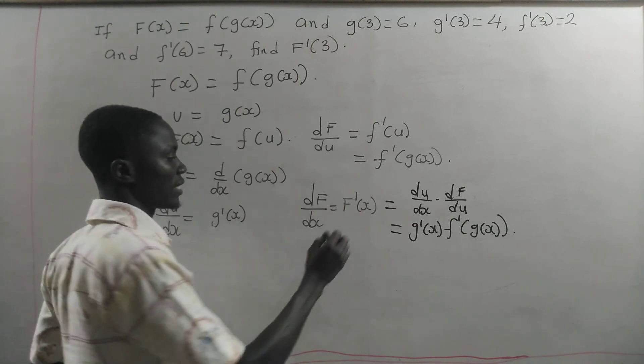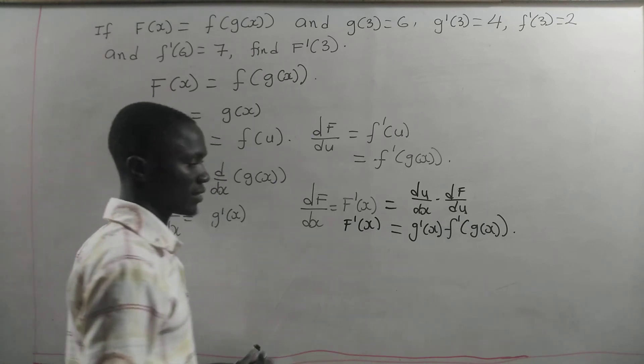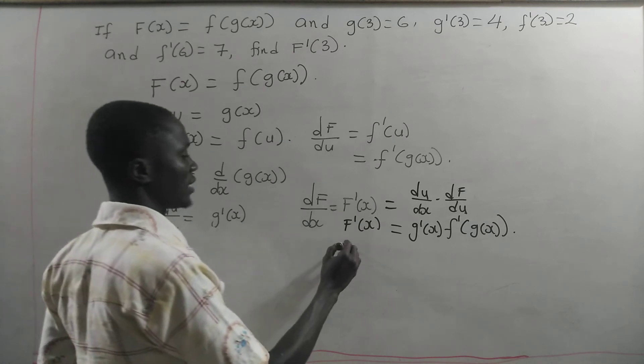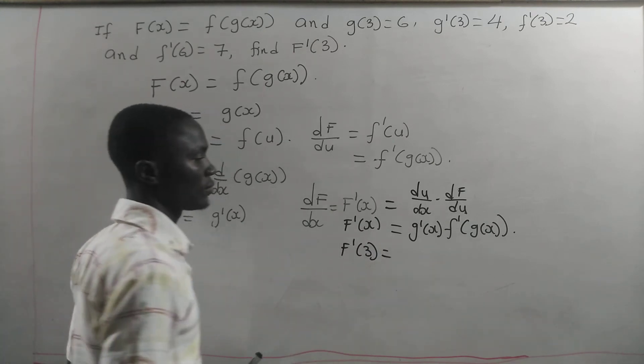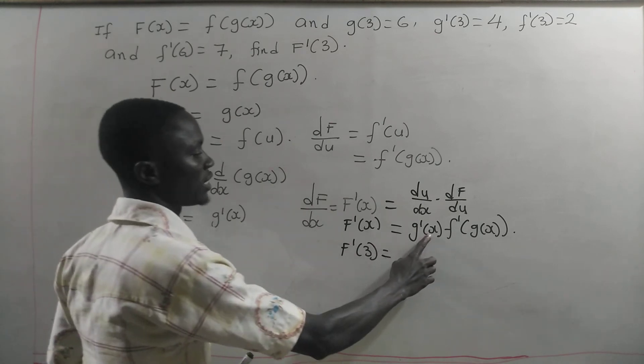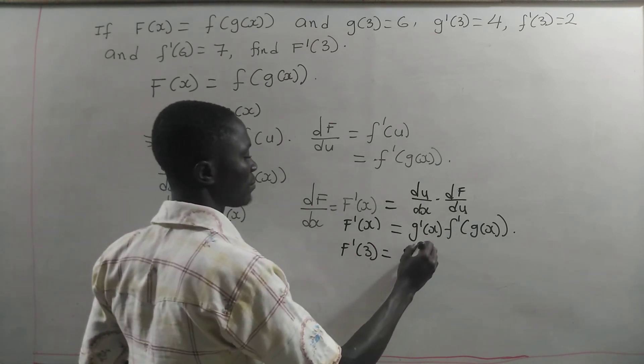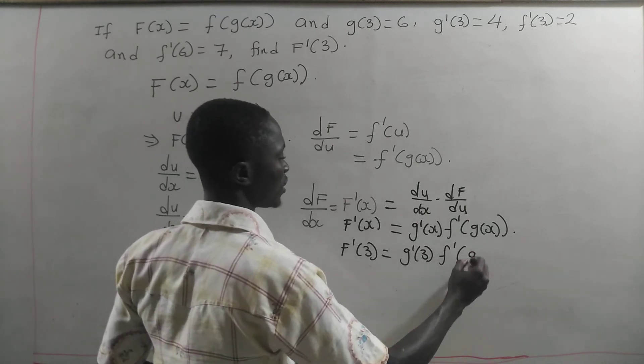This is our F prime of x. Now, how do we find F prime of 3? Meaning that whenever we see x, we should put 3 there. So we take our g prime of 3 times f prime of g of 3.